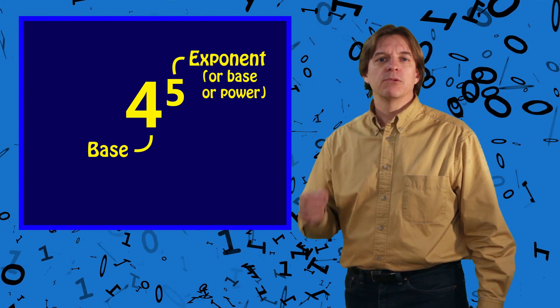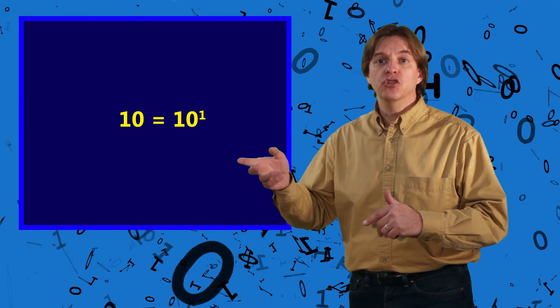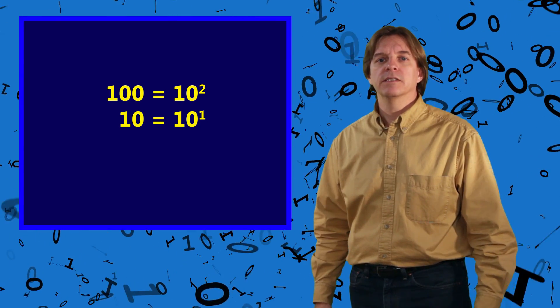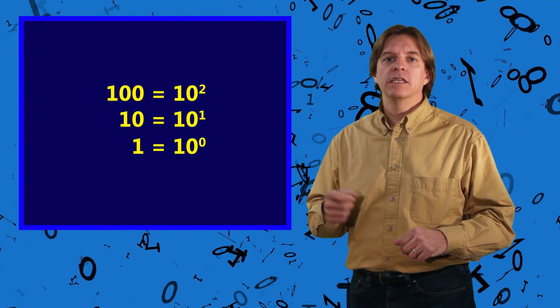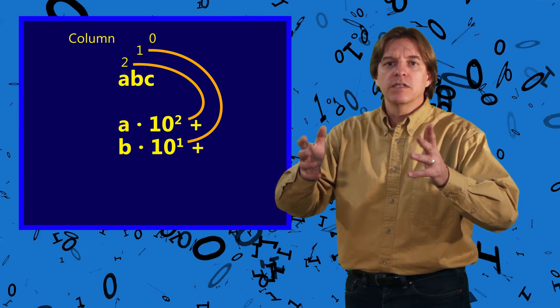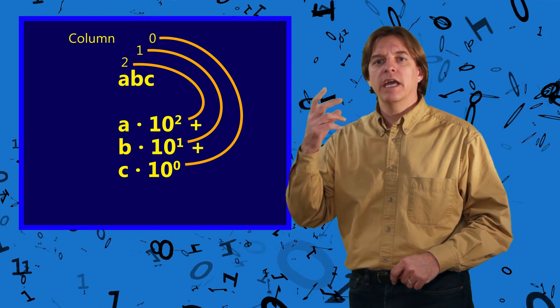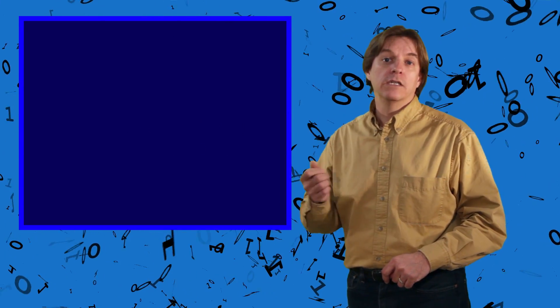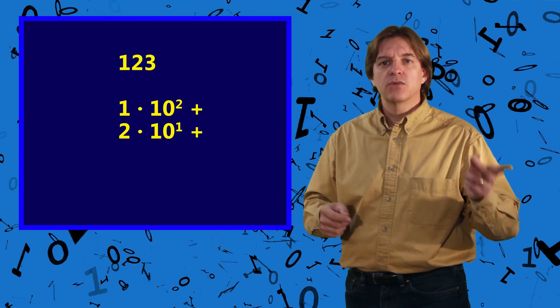Then as we grew and got more sophisticated, we learned about something called exponents. These columns we were so comfortable with could now be represented by 10 raised to the number of the column. So the tens column was 10 to the 1, and the hundreds column was 10 to the 2. The units column took advantage of a weird property of exponents: anything raised to the power of 0 is 1. Any number could be split into its constituent parts by taking the digit in that column, multiplying it by the power of 10 for that column, and adding the results together.